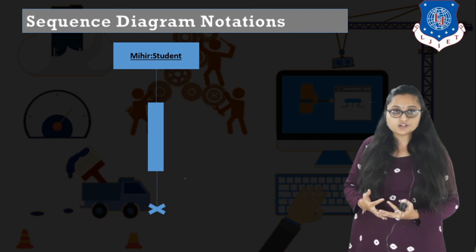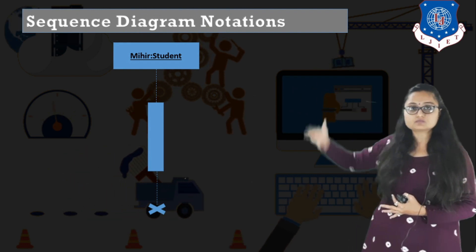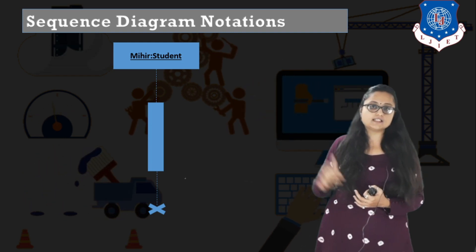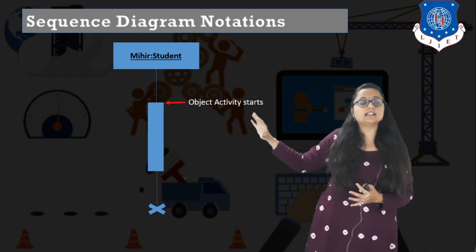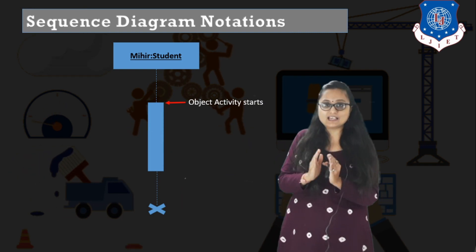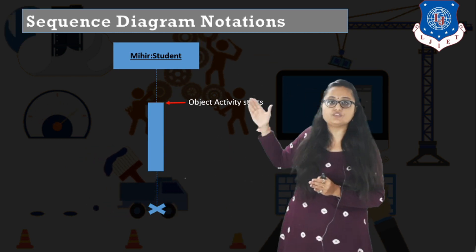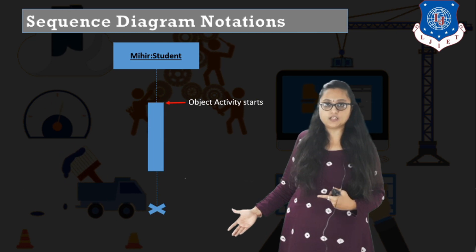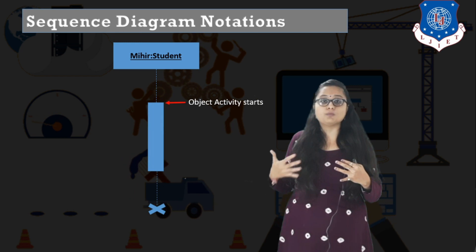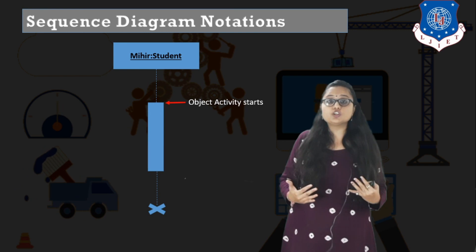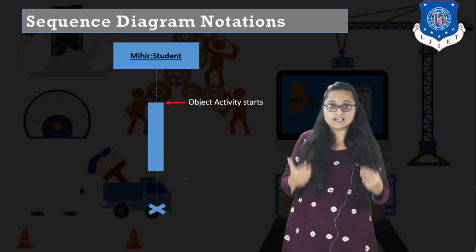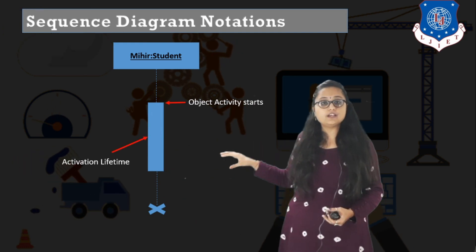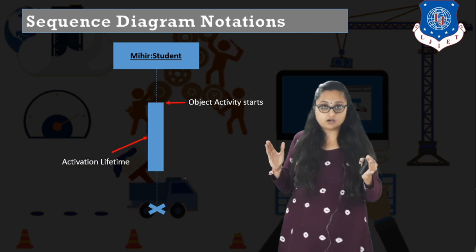Let us study different notations associated with sequence diagram. Here you can see an object with a class name — for example, object from class student — with a vertical dashed line. But there is also a solid vertical bar associated with this object and lifeline. This solid bar basically represents the activation of the object. The vertical dashed line indicates the lifetime of the object, but during the whole lifetime, it is not always in an active state. The solid bar shows that the object is activated and starts interaction.